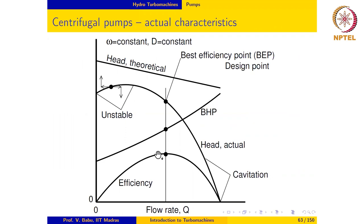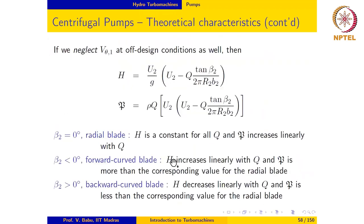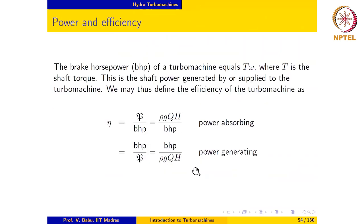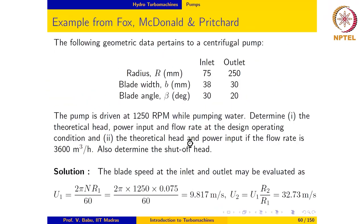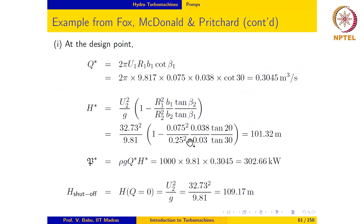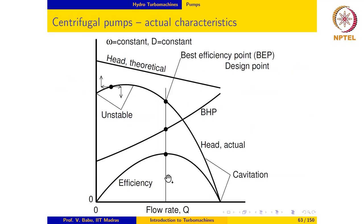We have also plotted the efficiency. The efficiency for the pump is defined as rho·G·Q·H — the hydraulic power — divided by BHP. This increases to a maximum and then falls down.